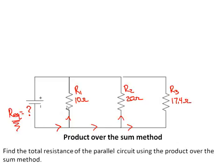We're asked to find the equivalent. Now the product over the sum method, the way it works, well I'll give you the formula first. It's R equivalent equals R1 times R2 divided by R1 plus R2.